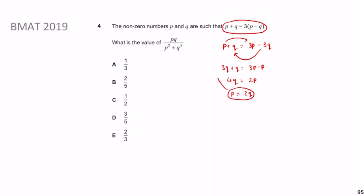Now the next obvious thing to do is plug p = 2q into the other expression. So I get (2q · q) over ((2q)² + q²), which gives me 2q² over (4q² + q²), and simplifying that gives 2q² over 5q². The q² terms cancel out, leaving 2/5.